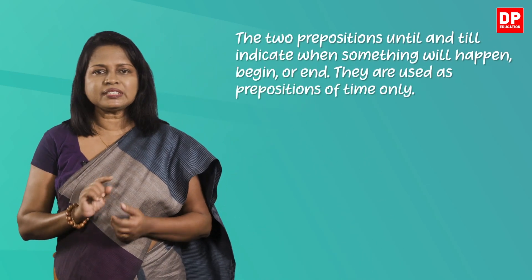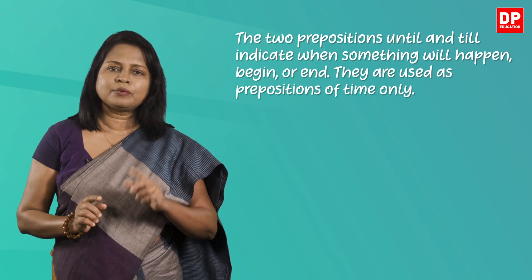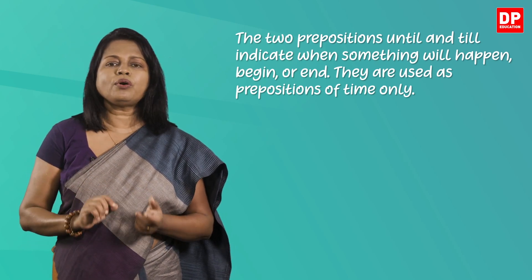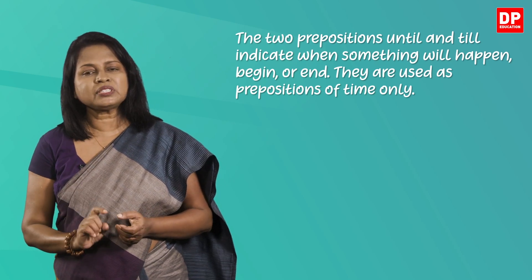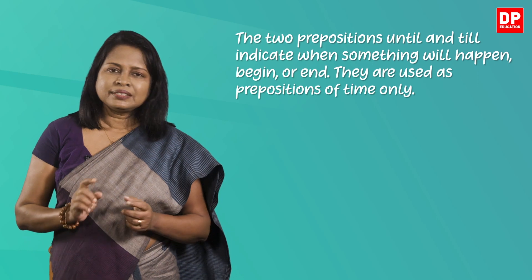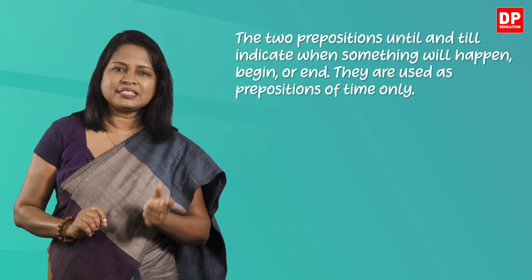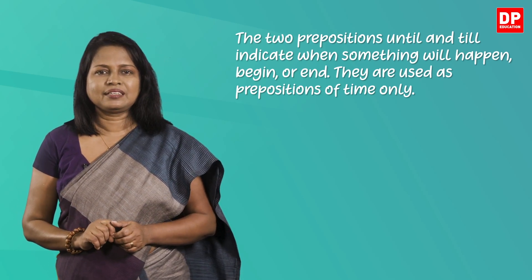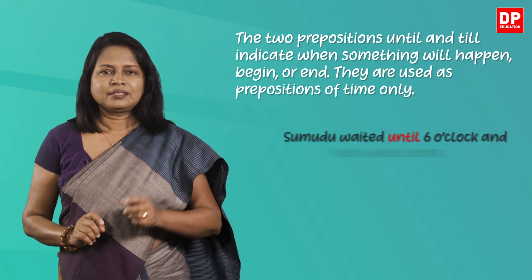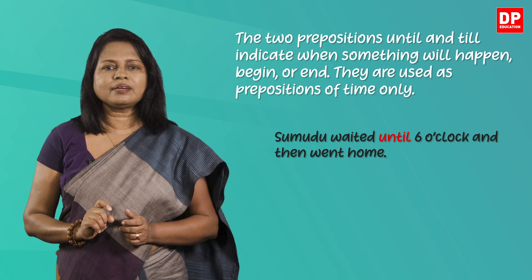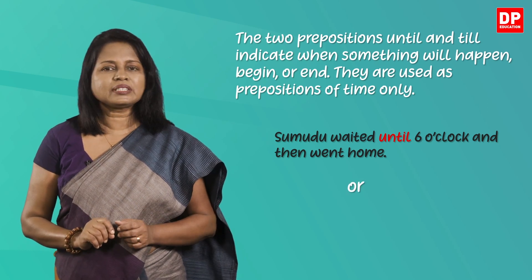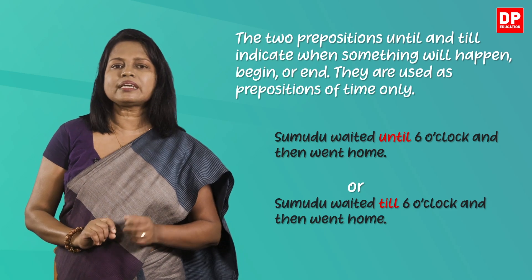Now let's learn about the two prepositions of time: till and until. They can be used both as prepositions and conjunctions, but today we are learning only about their function as prepositions. 'Until' and 'till' indicate when something will happen, begin, or end. They are used as prepositions of time only. These two prepositions mean exactly the same, but 'till' is more common in informal style. For example: 'Sumudu waited until six o'clock and then went home', or 'Sumudu waited till six o'clock and then went home.'